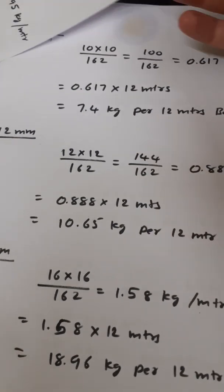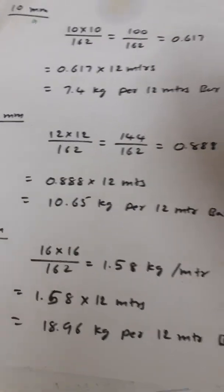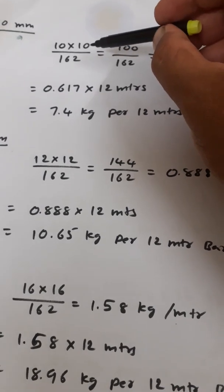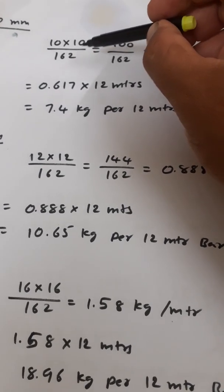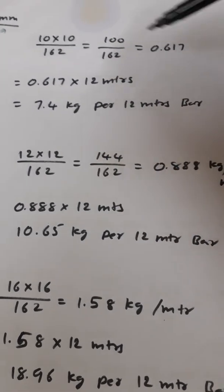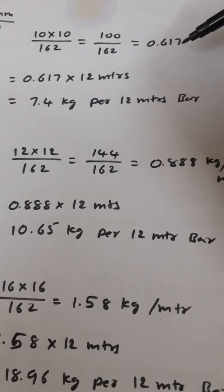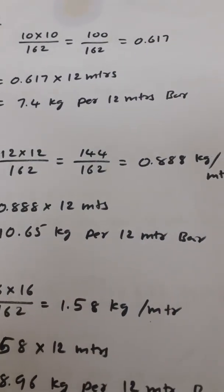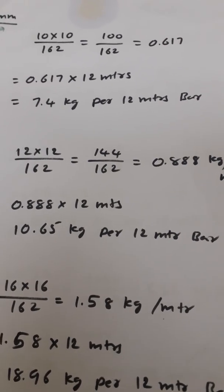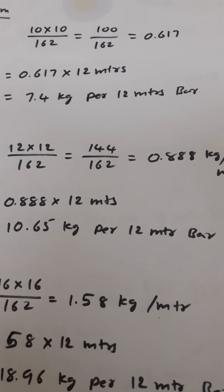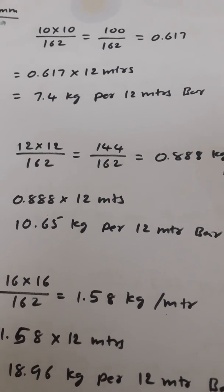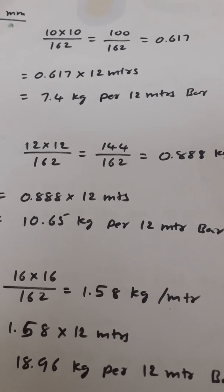For a 10mm bar, it will be D squared: 10 × 10 divided by 162, which gives 0.617 kg per meter. Multiplying 0.617 kg by 12 meters gives 7.4 kg per 12-meter bar.